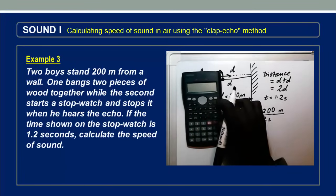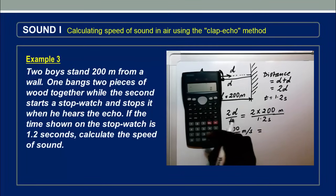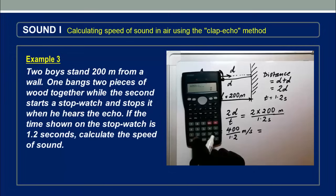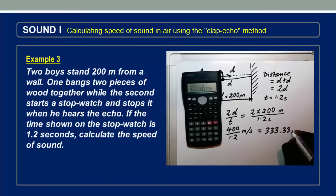So I have my calculator handy here. It's a good practice. All the time when you are solving questions, have your calculator with you. So I divide 400 by 1.2, and I get 333.33 meters per second.